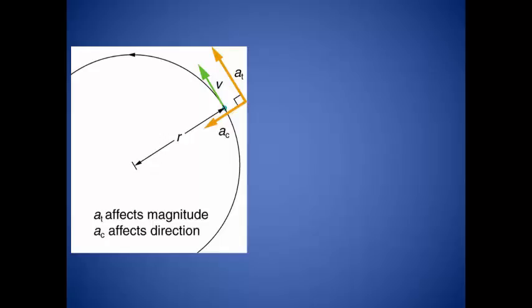So we have two different accelerations to deal with. The centripetal acceleration affects the direction of the motion, but it does not affect the magnitude of the velocity. The acceleration along the tangent, or the tangential acceleration, has no effect on the direction of the object, but will affect the magnitude of the velocity. Because the tangential acceleration is working along the tangent, by definition, the tangential acceleration and the centripetal acceleration will work at right angles to each other.